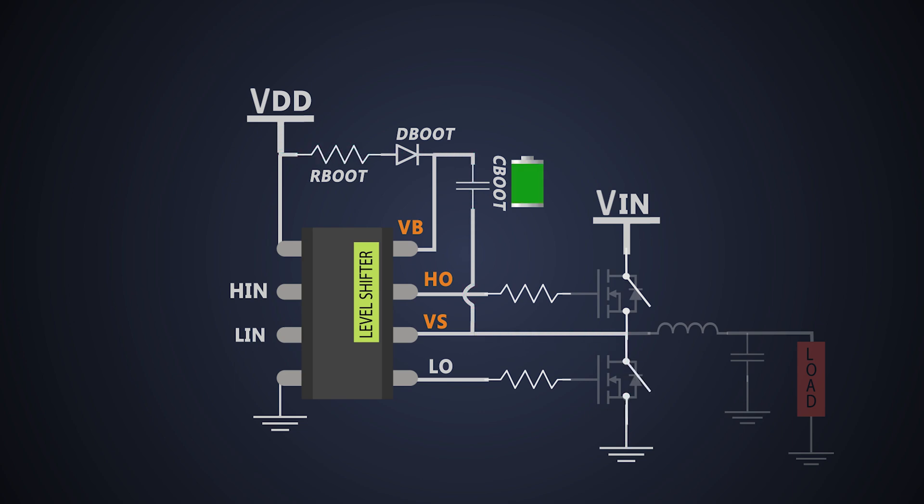When the low side switch is turned off, the VS is pulled to a higher voltage by the high side switch. The VBS supply floats and the bootstrap diode gets reverse biased and it blocks the current to flow back to VDD.